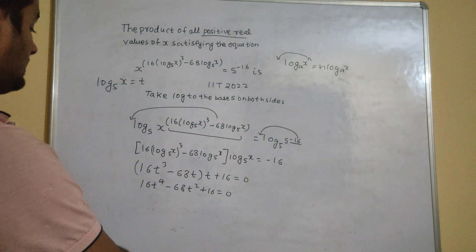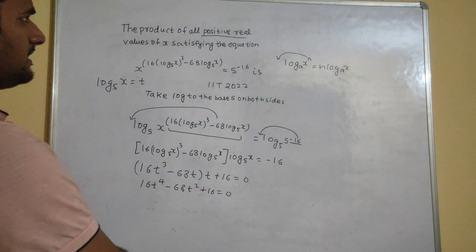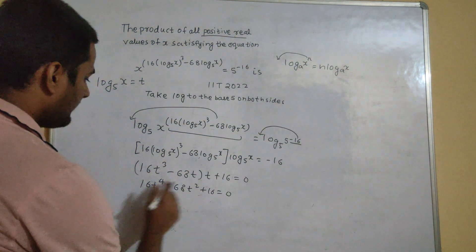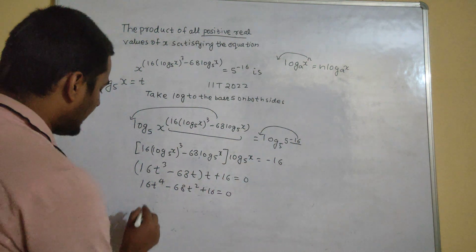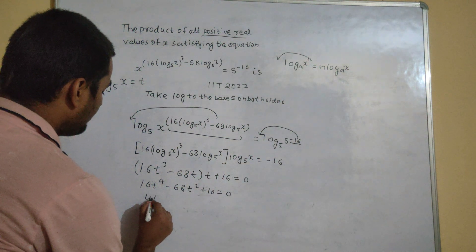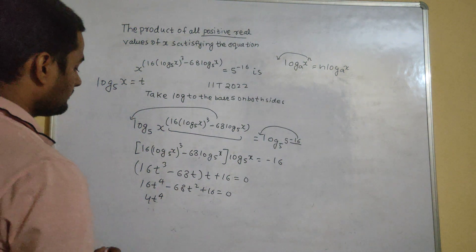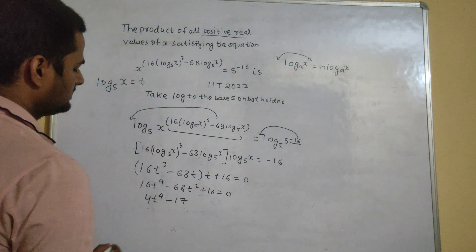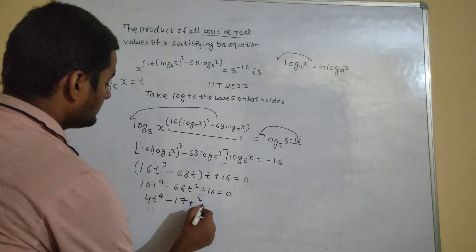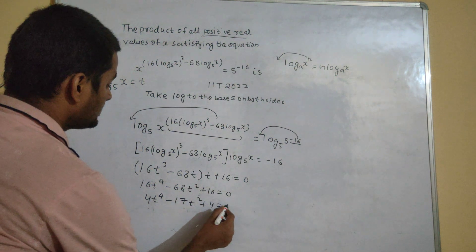Now, we can cancel it in 4 times. So if I cancel, take 4 common and throw that 4 to the other side, I will get 4 t power 4 minus 17 t square plus 4 equals to 0.